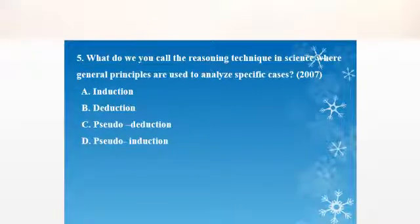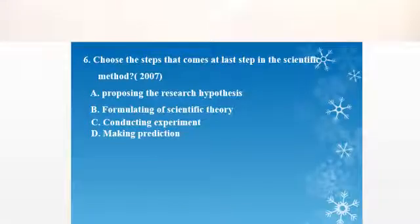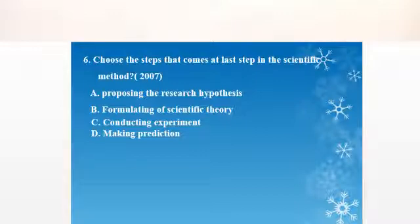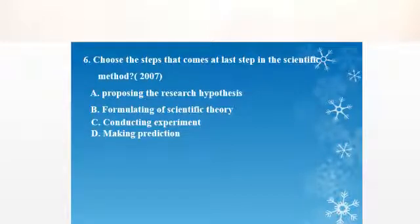There are many steps in scientific method. The steps include: proposing a research hypothesis, formulating a scientific theory, conducting an experiment, and making predictions. We have to do a background study, form a hypothesis, use an experimental method, analyze the results and draw conclusions, then report the results or formulate a theory.